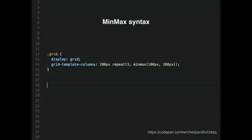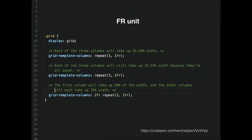Each one of those columns can be different widths — is there a way to make them equal? Yes, and that's a perfect segue to the FR unit. The FR unit is basically a fraction unit — it's a made-up unit and it's always going to be equal. If you have four columns each set to 1fr, it'll always be 25%. If you set one column to 2fr and two others to 1fr, you'll have a 50% column and two 25% columns.